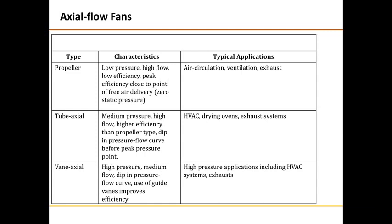Axial flow fans have three categories: propeller, tube axial and vane axial. For propeller, pressure is low, flow is high, efficiency is low, with peak efficiency close to free air delivery at zero static pressure. Applications are air circulation, ventilation and exhaust. Tube axial offers medium pressure, high flow and higher efficiency than propeller. Applications include HVAC, drying ovens and exhaust systems. Vane axial has higher pressure than the other two, medium flow, and is used for higher pressure applications including HVAC and exhaust.